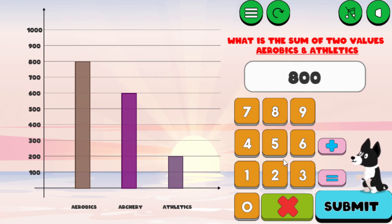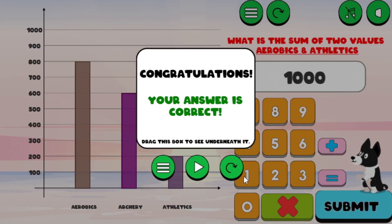So I've got 800 for aerobics, plus, and I'm going to put the 200 for athletics, hit the equal sign, don't hit Submit. So 1000, Submit, and that is correct.